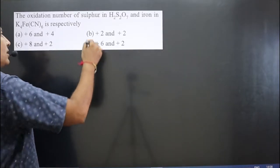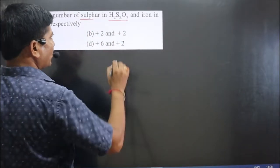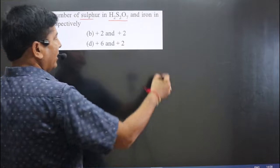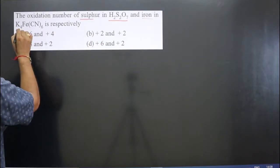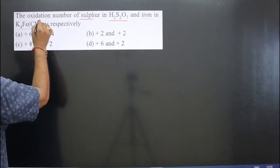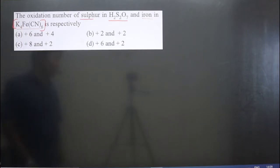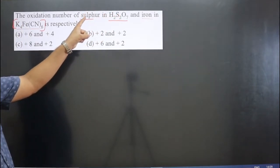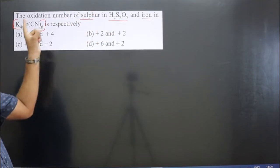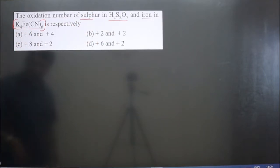The question asks for the oxidation number of sulfur in H₂S₂O₇ and the oxidation number of iron in a given complex. In the first compound, we have to calculate the oxidation number of sulfur, and in the second complex, we have to calculate the oxidation number of iron. We can follow the oxidation rule.